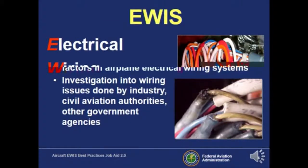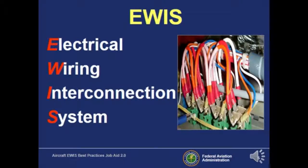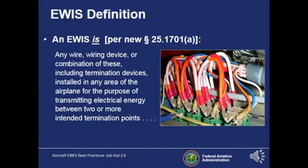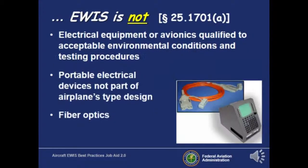EWIS stands for Electrical Wiring Interconnection System. EWIS is any wire, wiring device, or combination including termination devices installed in the aircraft. The purpose of EWIS is to transmit electrical energy from point A to point B. However, EWIS is not electrical equipment or avionics, not portable electrical devices, and not fiber optics.